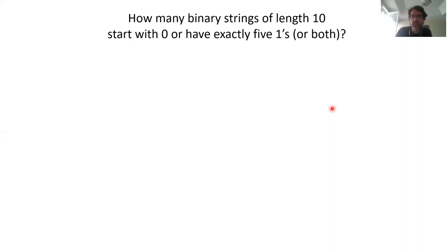How many strings of length six over alphabet A, B, C have at least five consecutive A's? There are two sets: strings starting with five A's (one free character at the end) and strings where positions 2–6 are all A's (one free character at the start). Each set has three elements. Their intersection is a single string — all six A's. By inclusion-exclusion: 3 + 3 − 1 = 5.